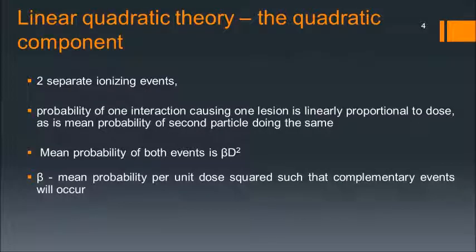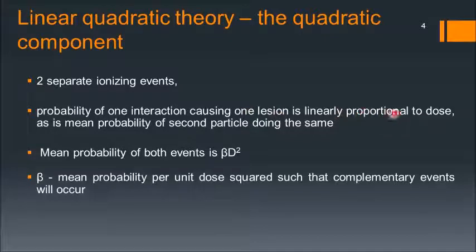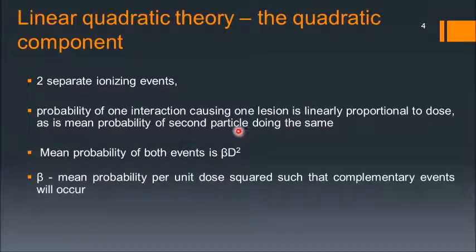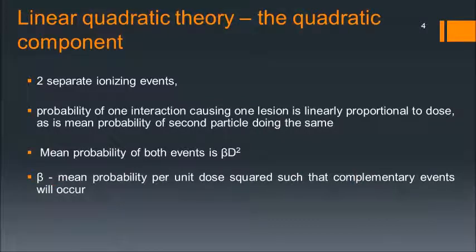The quadratic component arises from two separate ionizing events. The probability of one interaction causing one lesion is linearly proportional to dose, as is the mean probability of the second particle doing the same. Therefore, the mean probability of both events occurring becomes beta d squared, where beta is the mean probability per unit dose squared for both complementary events to occur.